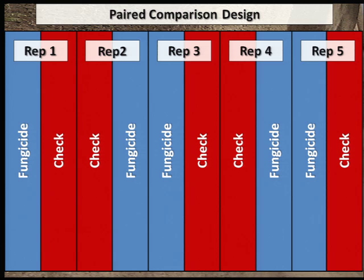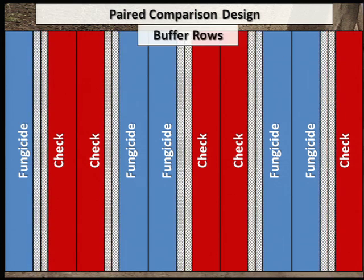When testing treatments such as nutrient and pesticide applications, buffer rows are needed to ensure that the check treatment is not affected by any product drift from the treated rows. Depending on the size of your equipment, you may need to plant extra rows for each comparison strip. For example, with a 90-foot sprayer, you would treat 90 feet or 36 rows in the center of the plot and leave untreated buffer rows on either side of the fungicide-treated strips.